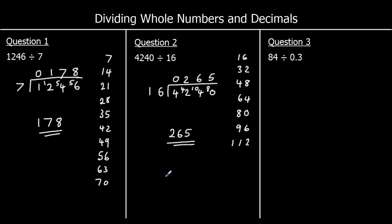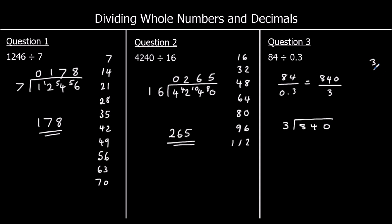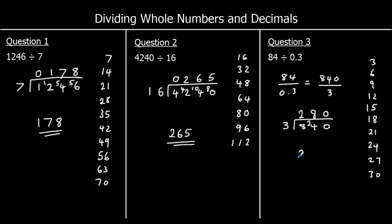Question 3: 84 divided by 0.3. I'm going to multiply top and bottom by 10, so that's the same as 840 divided by 3. The 3 times table: 3, 6, 9, 12, 15, 18, 21, 24, 27, 30. How many 3s go into 8? 2, making 6, with 2 left to carry into the tens. How many 3s go into 24? That's 8. How many 3s go into 0? 0. So the answer is 280.